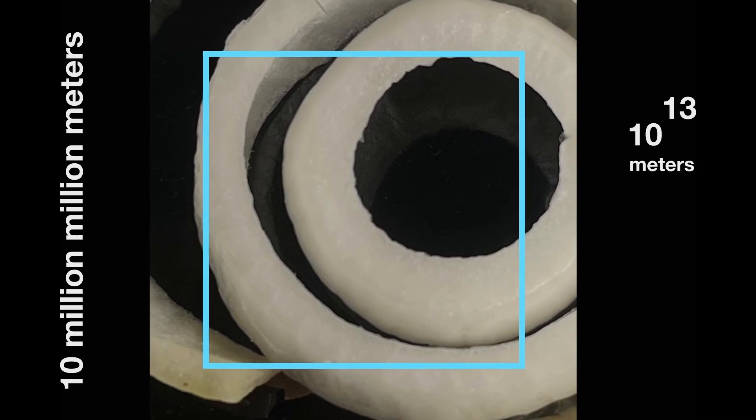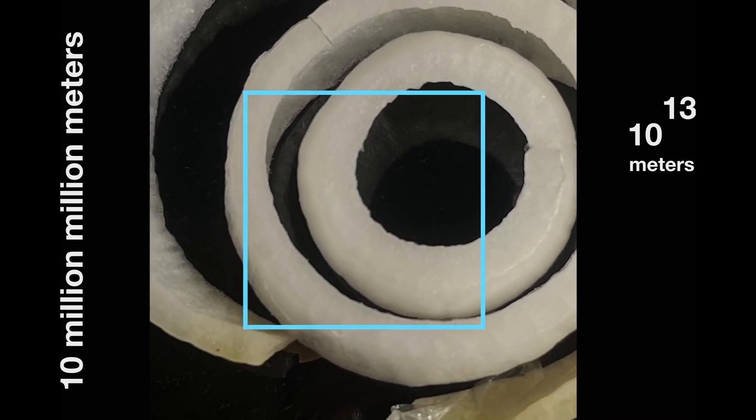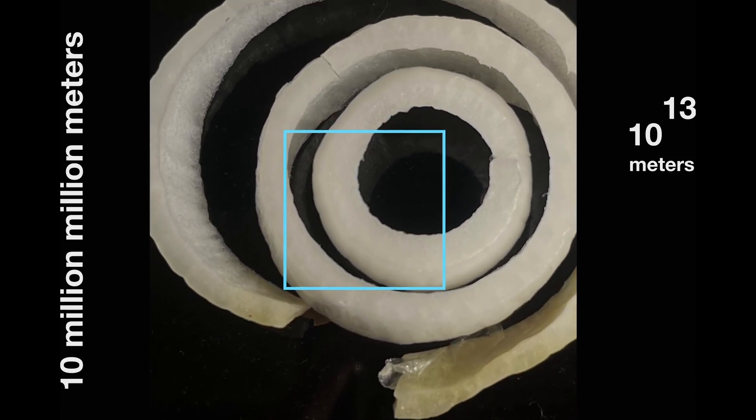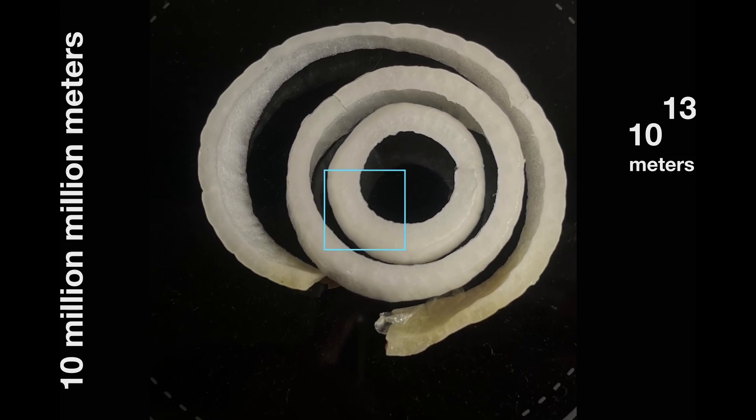The Milky Way contains 100 to 400 billion stars, as well as the supermassive black hole, which grows by pulling gas and dust particles in.